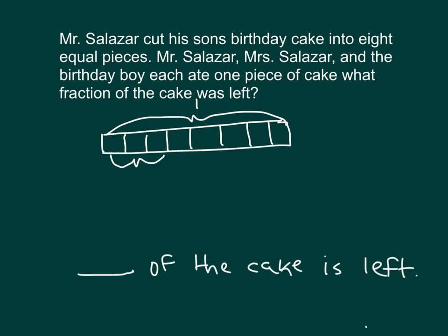This is the amount that's eaten. Mr. Salazar, Mrs. Salazar, Birthday Boy — they each ate one piece. The rest of it is what is left over: 1 eighth, 2 eighths, 3 eighths, 4 eighths, and 5 eighths of the cake is left over.